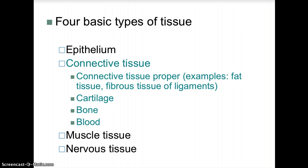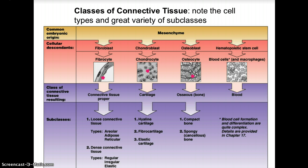Connective tissue proper includes fat tissue and fibrous tissue of ligaments. We also have cartilage, bone, and blood. Connective tissue is classified based on cell types with many subclasses. The common embryonic origin is mesenchyme, and its cellular descendants are fibroblasts, chondroblasts, osteoblasts, and hematopoietic stem cells. Fibroblasts become fibrocytes, chondroblasts become chondrocytes, osteoblasts become osteocytes, and hematopoietic stem cells give rise to blood cells and macrophages. The resulting classes are connective tissue proper, cartilage, osseous or bone tissue, and blood.